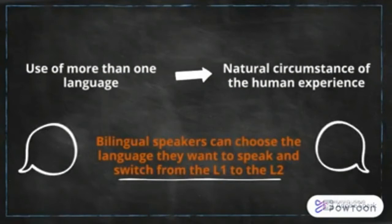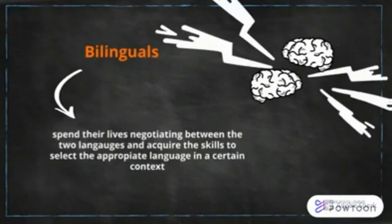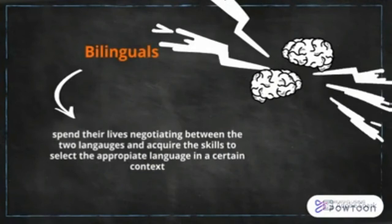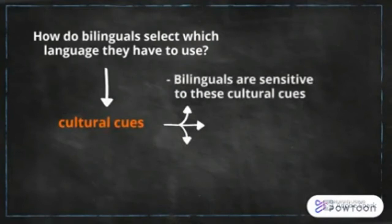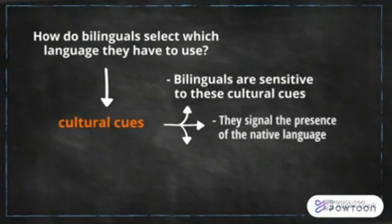Therefore, bilinguals spend their lives negotiating between the two languages and acquire skills to select the appropriate language in a certain context. But how do bilinguals select which language they have to use? Bilingual speakers are sensitive to cultural cues — cultural signs in the environment that show the presence of the native language. Some of these cultural cues are faces and concepts.